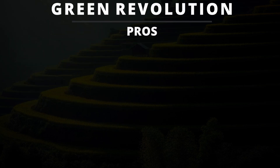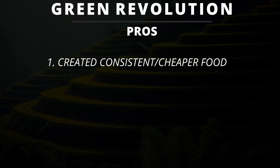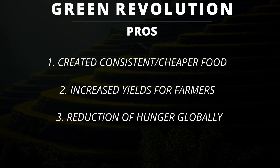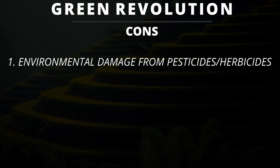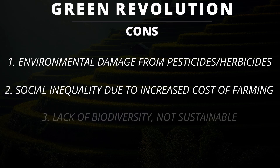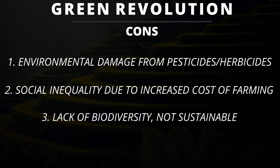College Board also wants you to note the pros and cons of the green revolution. The pros included the ability to make cheaper food, increasing yield for farmers, and reducing global hunger. However, on the other hand, we run into environmental damage from the pesticides and herbicides, social inequality as machines increase startup costs, and a lack of biodiversity, which causes certain strains of plants to go extinct.